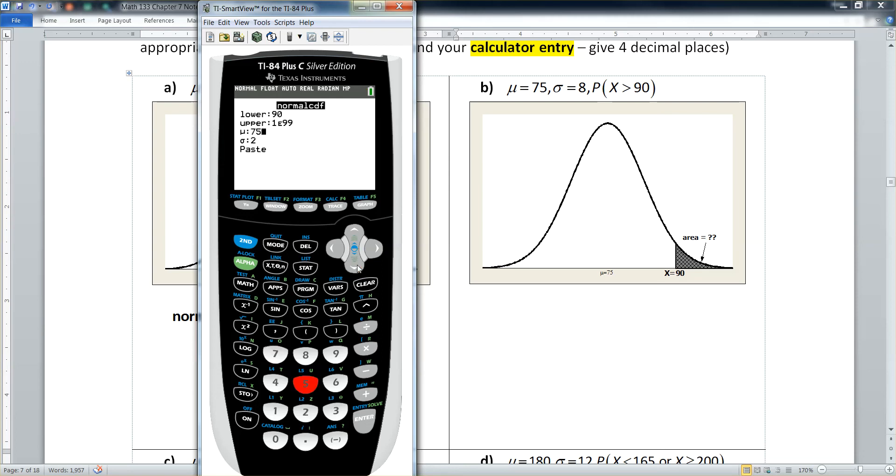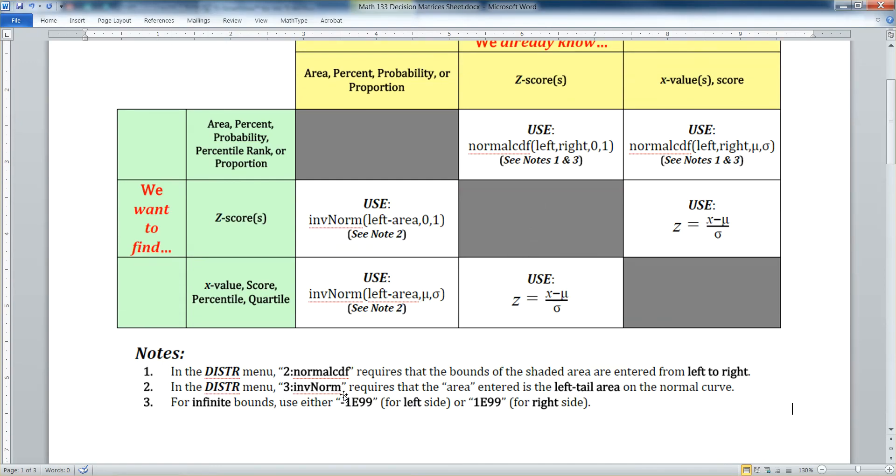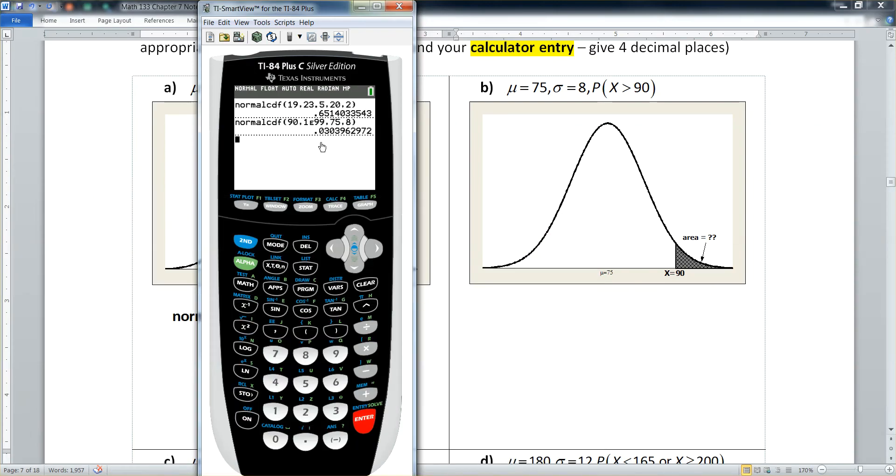So take 90 and go to forever quote unquote, but your calculator doesn't have a forever. So you tell it one E 99. And notice this is increasing without bound, forever and ever and ever. That's why it uses one E 99. It's right there in the decision matrix. It tells you for infinite bounds for a right side, infinite bound, you're going to use one E 99 for the right side. If it's the left bound, which we're about to see, you use the other one. Okay, so that gave us an answer of 0.0304. So let me type that up.